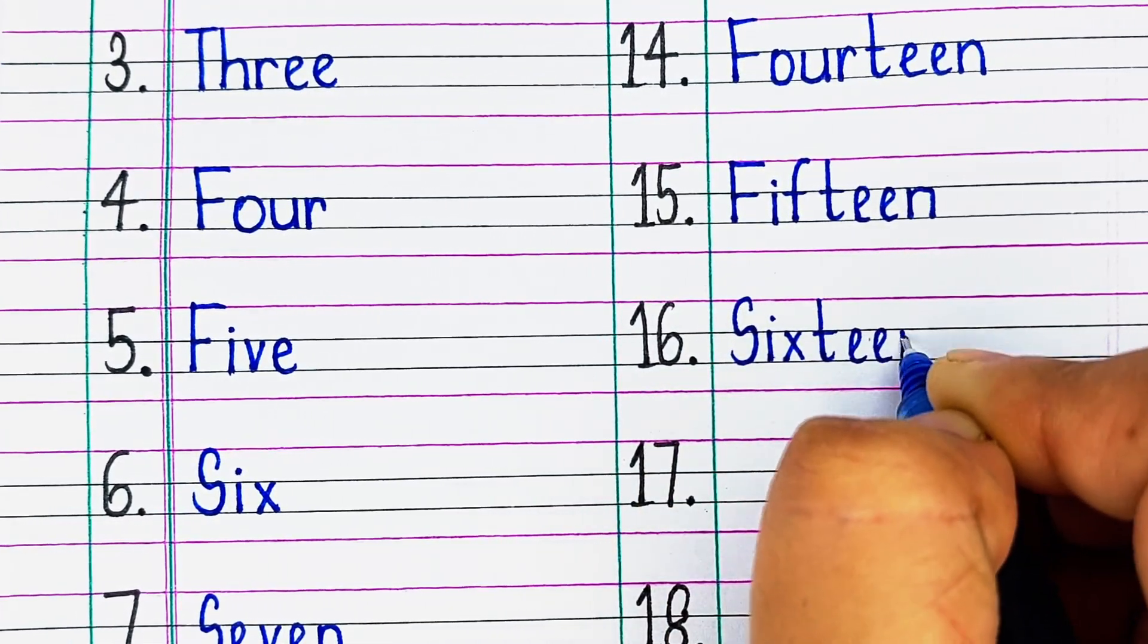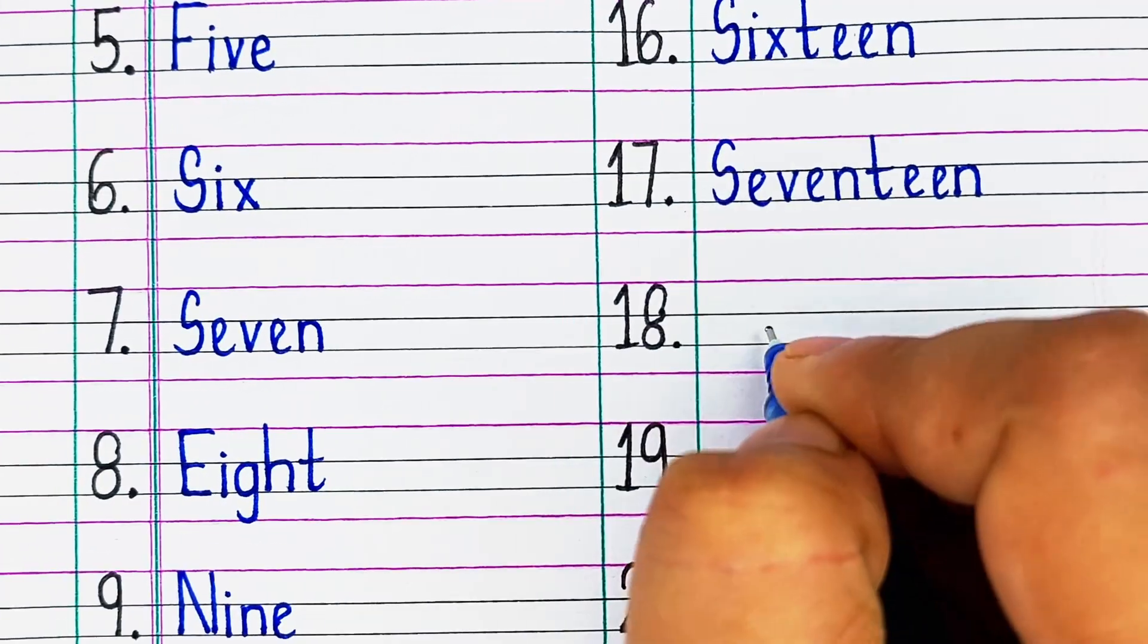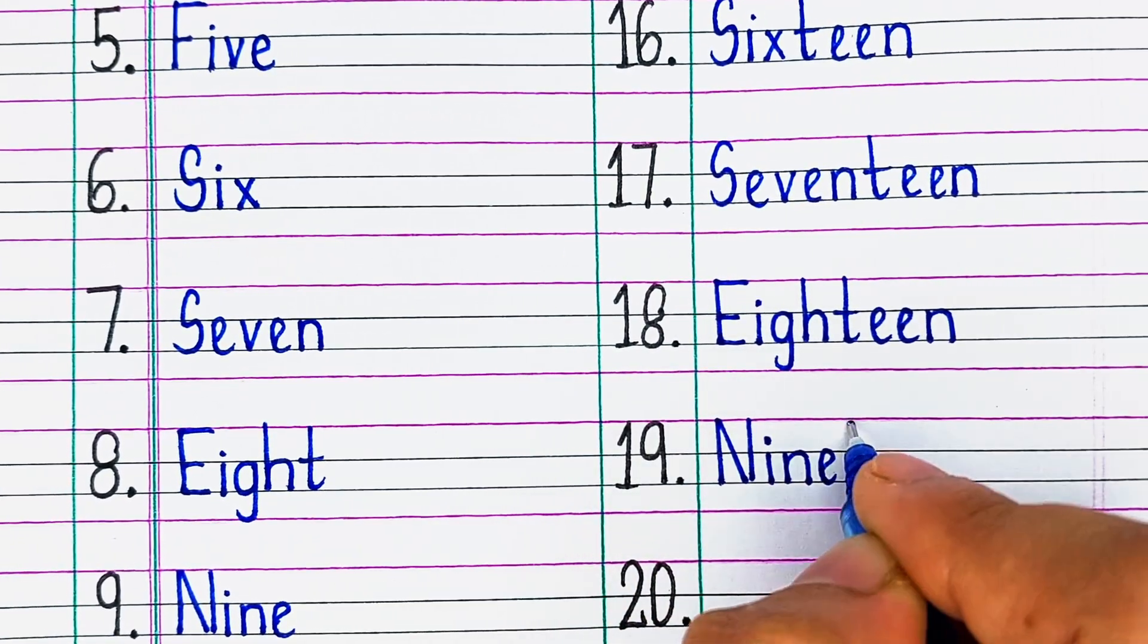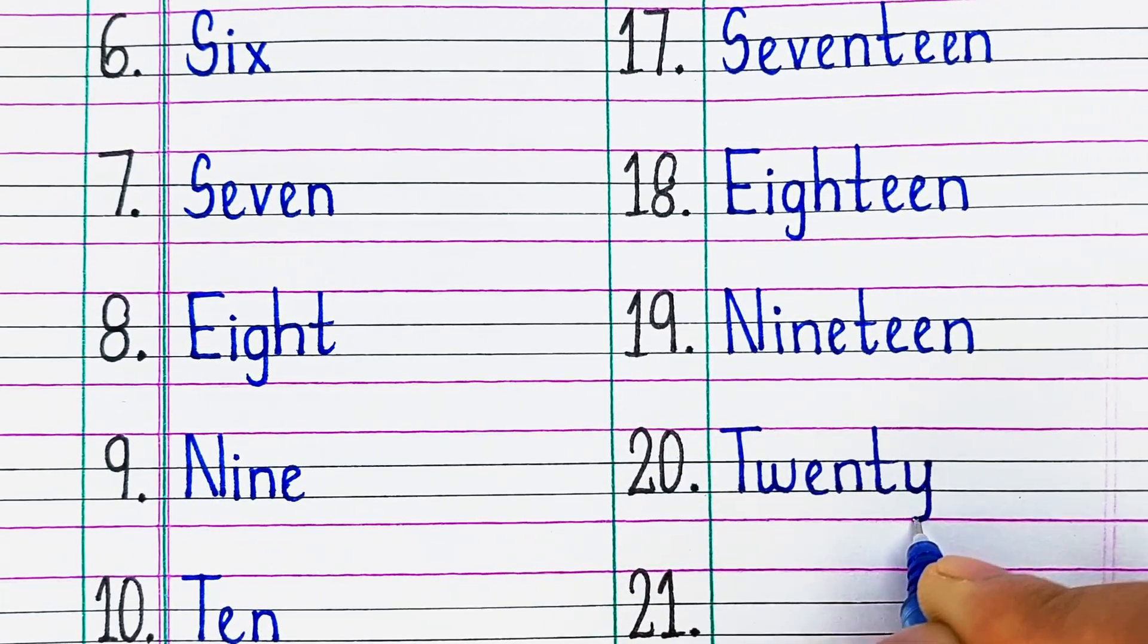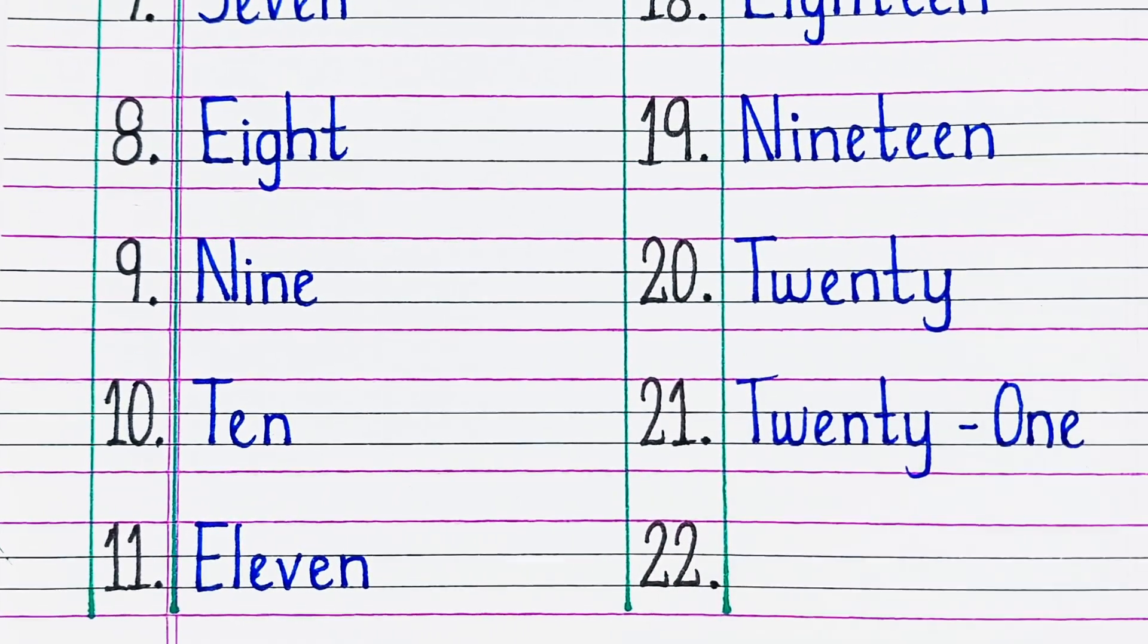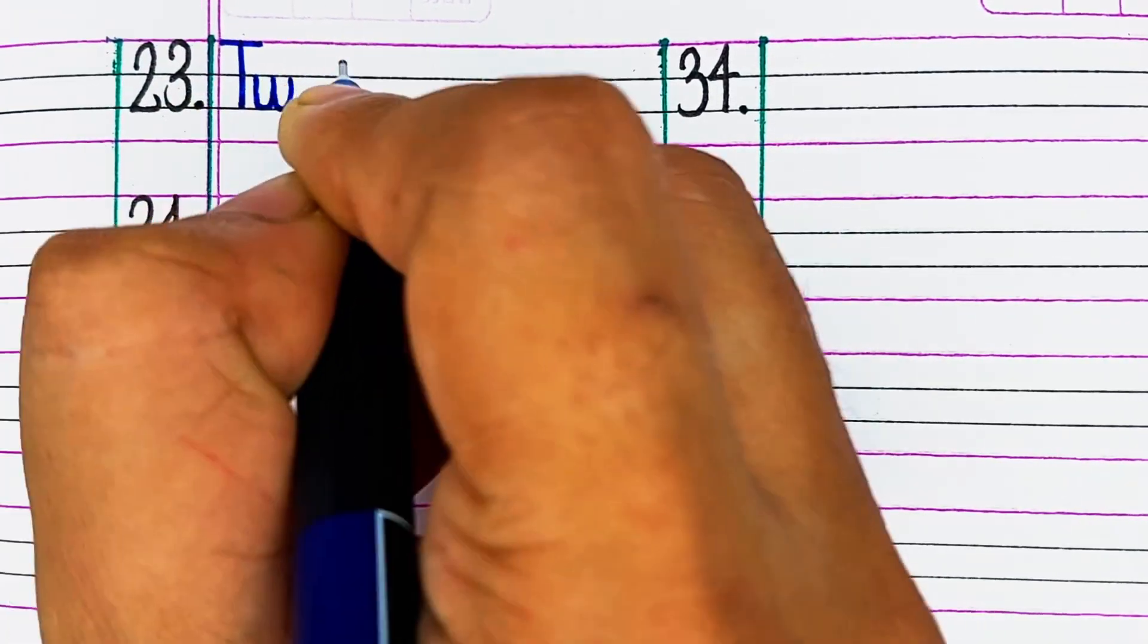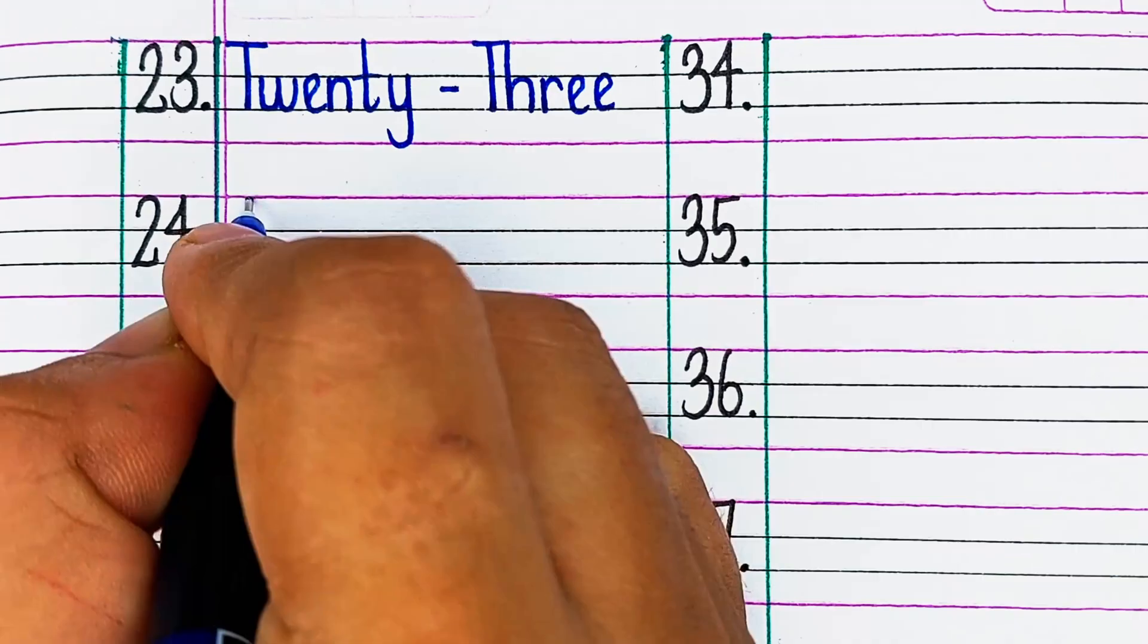Next, F-I-F-T-E-E-N, 15. Next, S-I-X-T-E-E-N, 16. Next, S-E-V-E-N-T-E-E-N, 17. Next, E-I-G-H-T-E-E-N, 18. Next, T-W-E-N-T-Y, 20. Next, T-W-E-N-T-Y-O-N-E, 21.